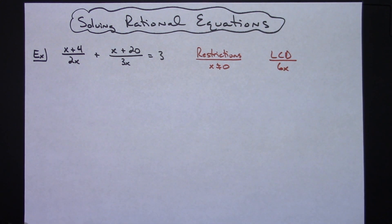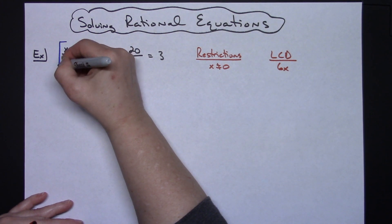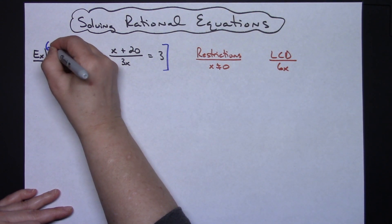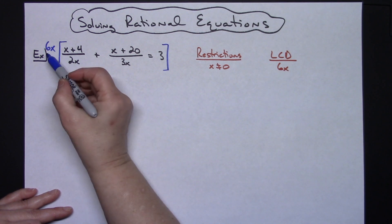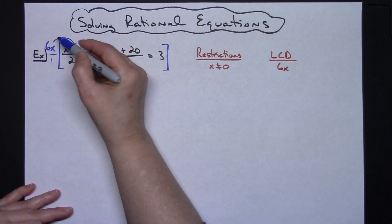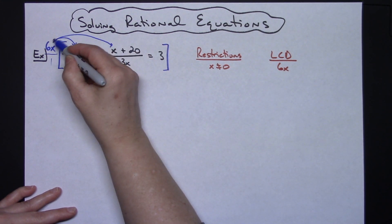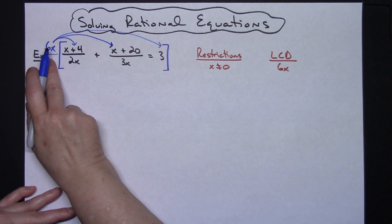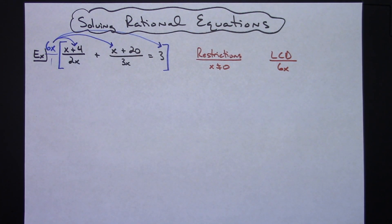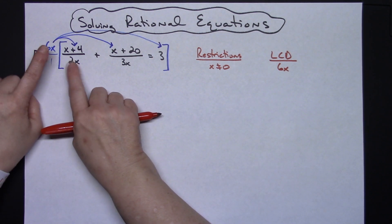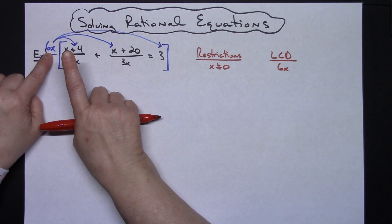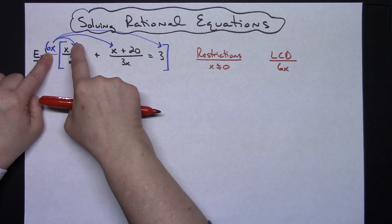I'll do it on this first line so I don't have to rewrite the problem. I write the least common denominator, 6x, only one time — kind of at the top so I realize it's over 1 — and then distribute it to each term on the inside. That makes the problem less cluttered than writing 6x next to each term. So I have 6x in the top and 2x in the bottom: 6x divided by 2x gives me 3 times whatever is in that numerator.